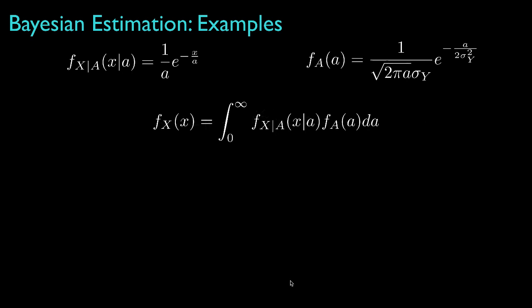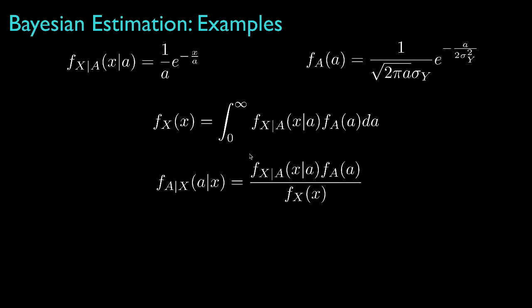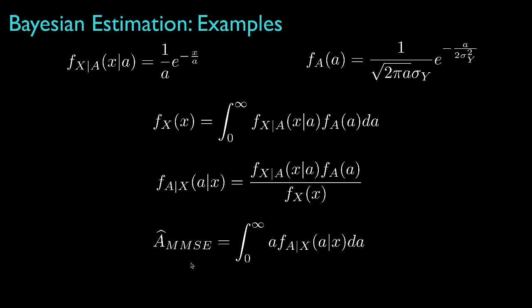To solve for the minimum mean square error estimator, we need to evaluate the unconditional density for the observation. Then we evaluate the posterior density for the parameter conditional on the observation, from which we evaluate the conditional mean of the posterior density, which provides the MMSE estimator. At this point, we have a calculus problem that may or may not be tractable, and could be approached by hand or using symbolic or numerical tools such as MATLAB or Mathematica.